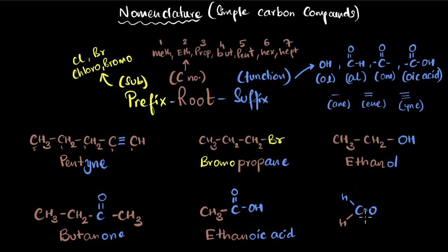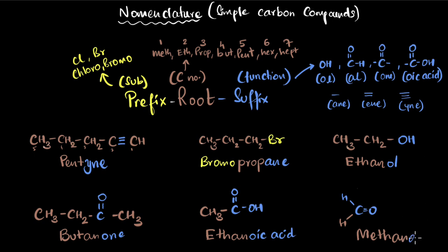For the final example, there is no prefix. The root word has only one carbon, so it's 'meth.' The functional group is an aldehyde — a C double bond O connected to an H — so the suffix is 'al.' I write 'methane,' delete the 'e,' and write 'al' to get methanal.